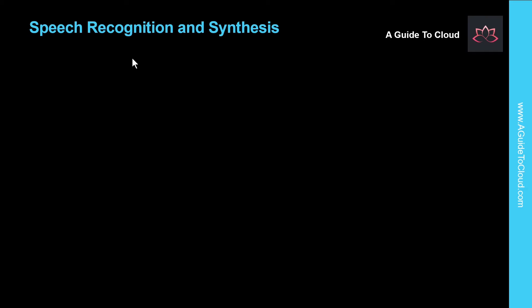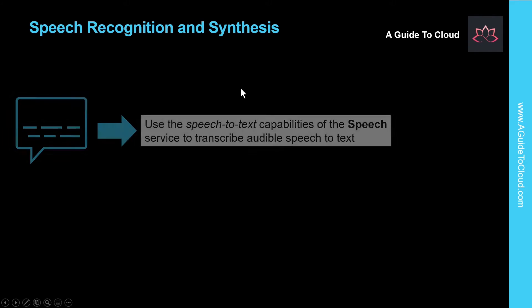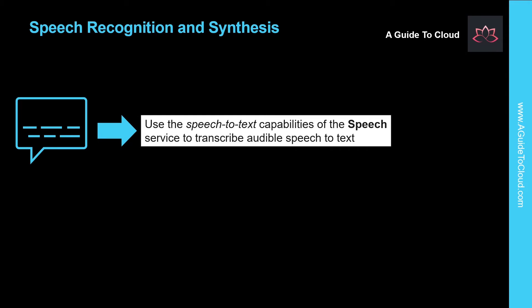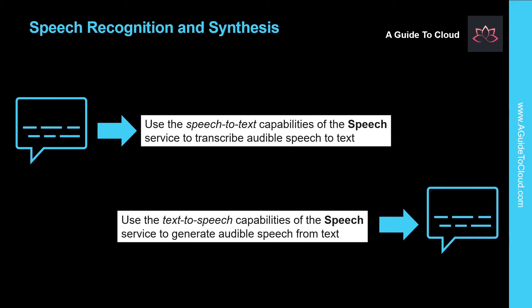In this example, we're going to look at speech recognition and synthesis. The speech service provides a speech-to-text API that you can use to implement text recognition functionality. The service supports text transcription in more than 60 languages. Conversely, the text-to-speech API can synthesize audio speech from text with the option to specify regionally appropriate voices with human-like pronunciations.